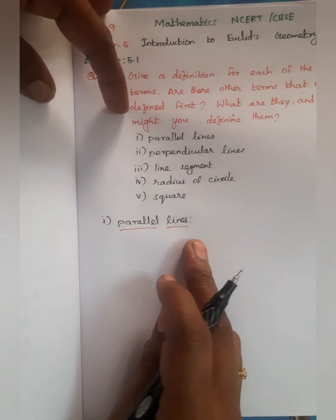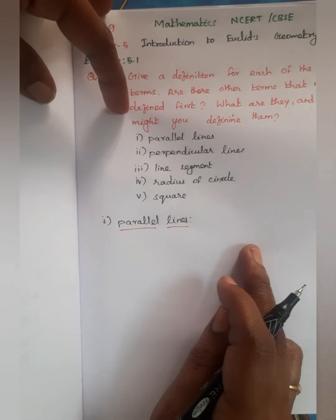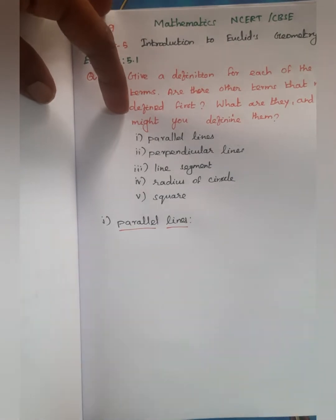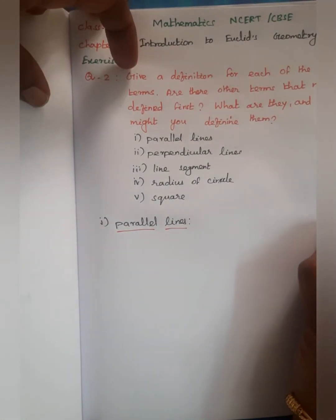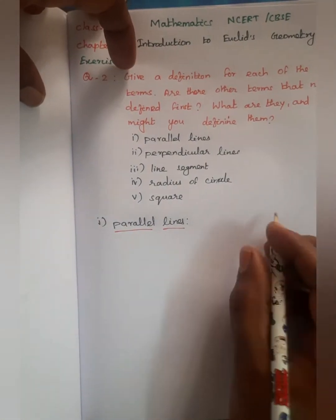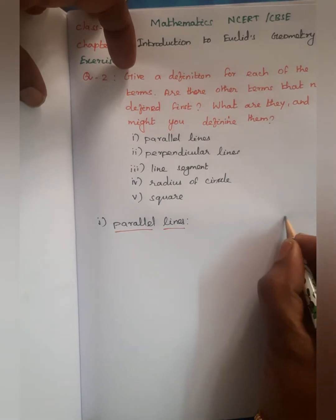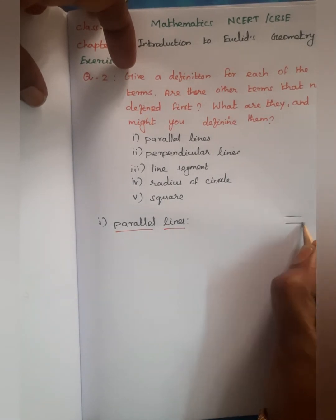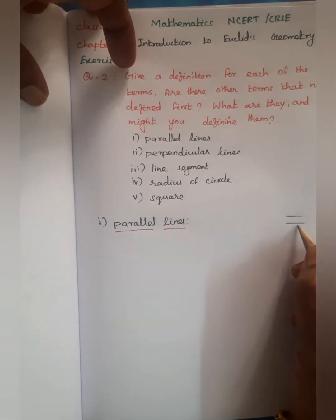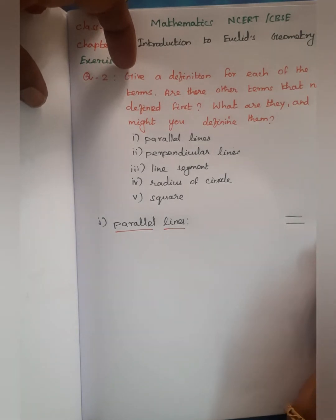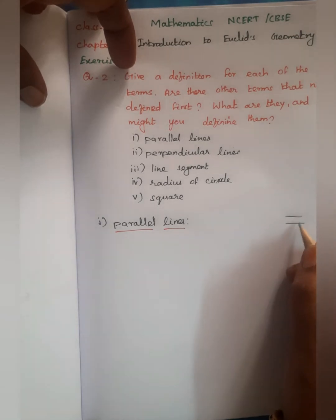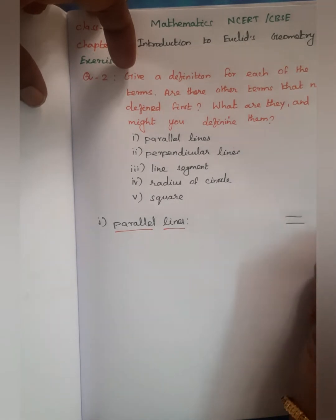The first one is parallel lines. Parallel lines is what you define — two lines. Two lines are described together.